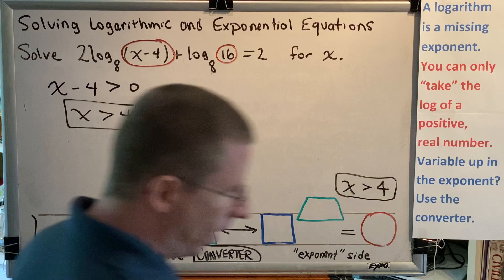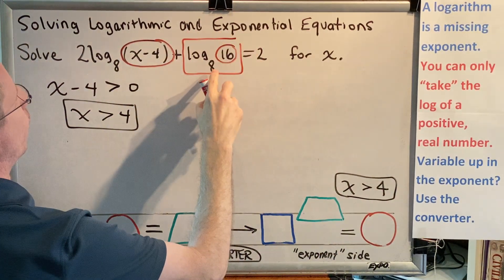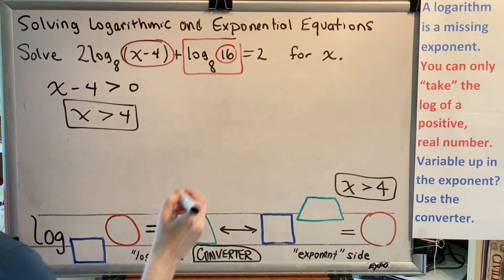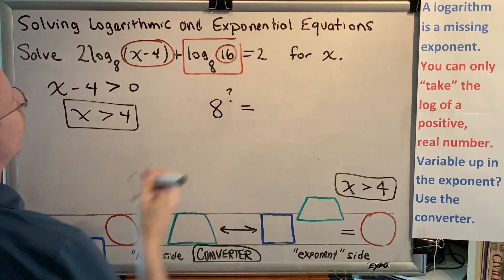And while we're at it, before we move on, I'd like you to notice that we have a logarithm here that has a number for both the base and the argument, which means that's always an opportunity for us to stop and think. Can this be rewritten in an easier, more convenient way?